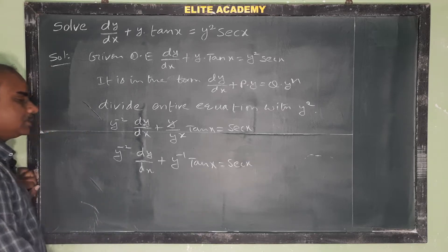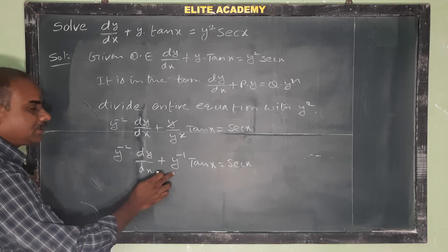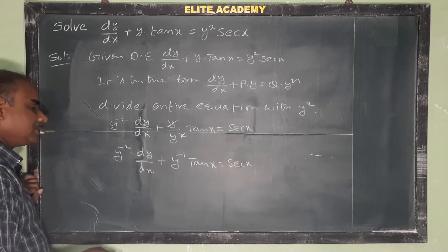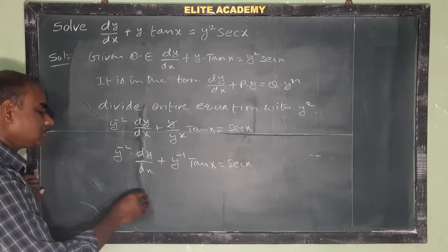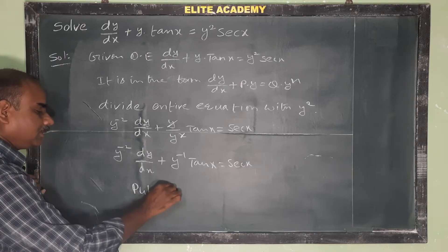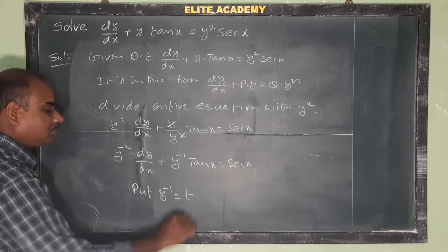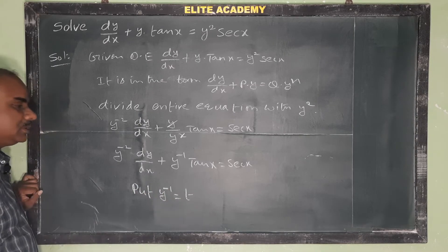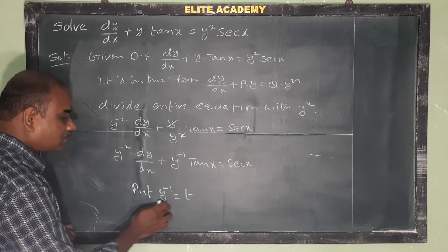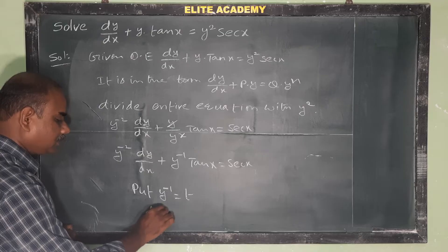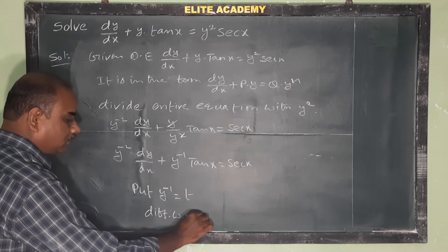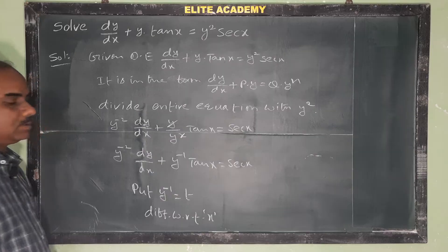So y^(-1)·tan(x) = sec(x). Now use the substitution: let t = y^(-1). Differentiate with respect to x.